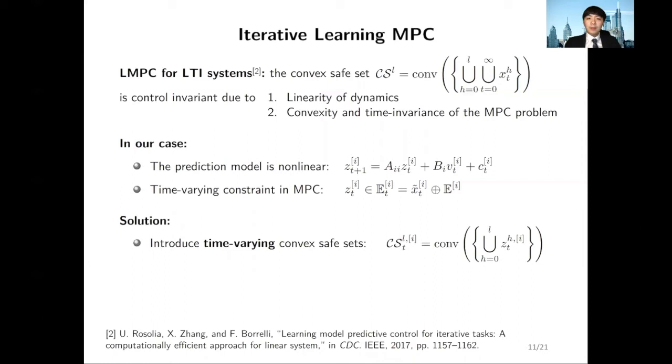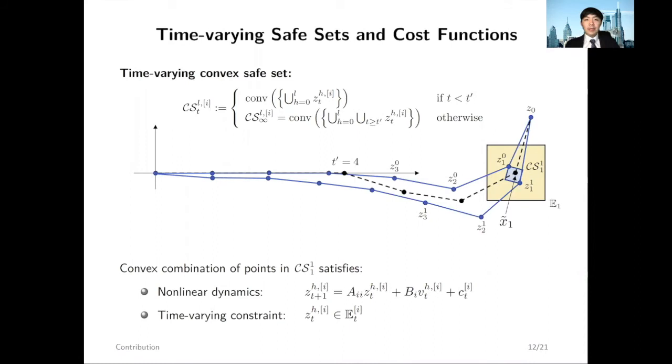Our solution is to consider a time-varying safe set for each subsystem I. More specifically, the safe set at time T is the convex hull of all nominal states at time T over all iterations.